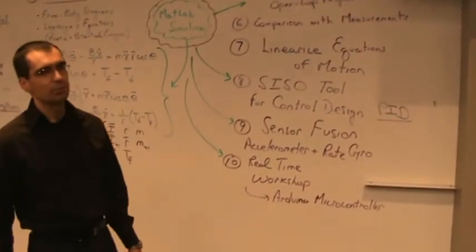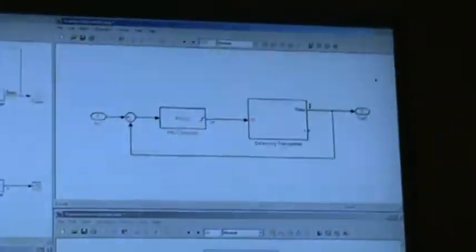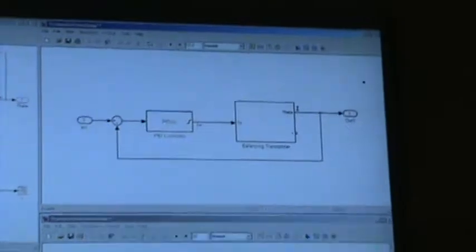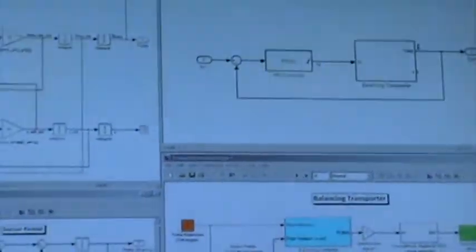Then we need to include the control loop that you can see on the screen on the top right corner, which is simply a PID loop. That can be tuned via the auto-tuning tool in Simulink or using the SISO tool.